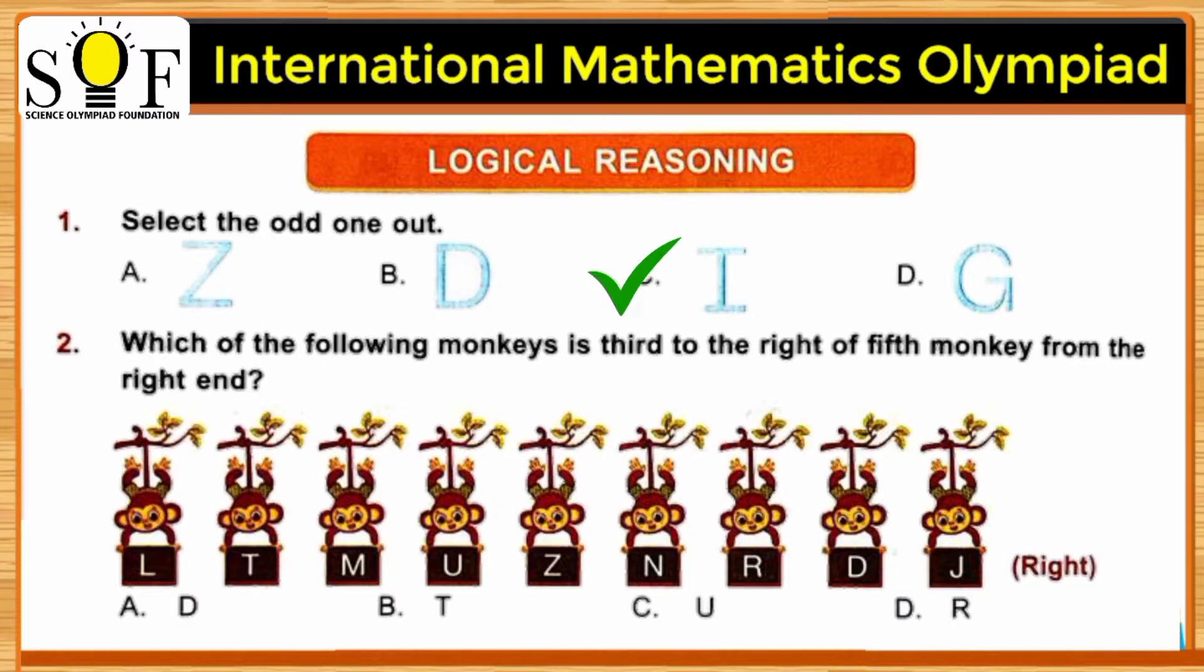Which of the following monkeys is third to the right of the fifth monkey from the right end? Now let's see where is the right end. Here is the right end, and we need to count the fifth monkey from the right. That is one, two, three, four, and five. Now we will see the third monkey from the letter Z.